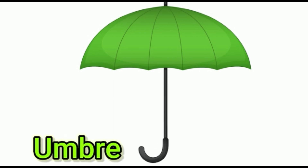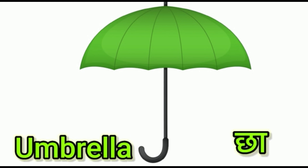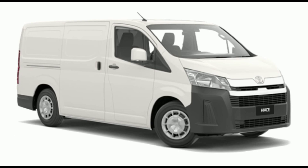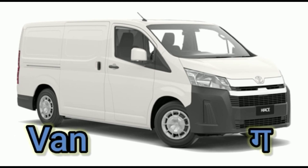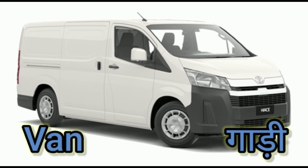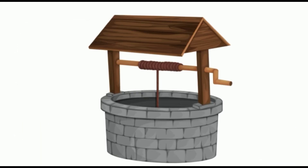U for umbrella. Umbrella means chata. V for van. Van means gari.